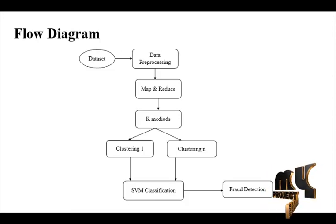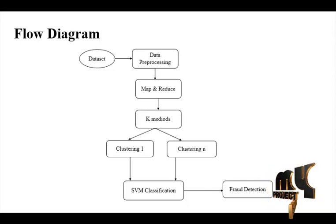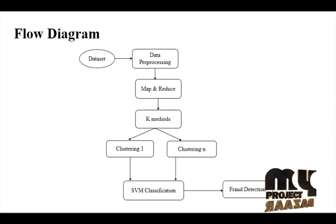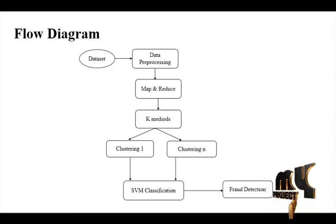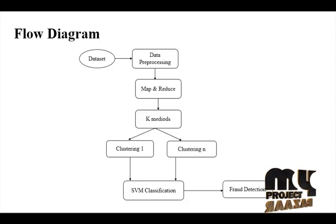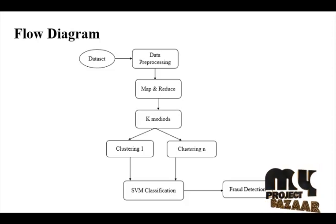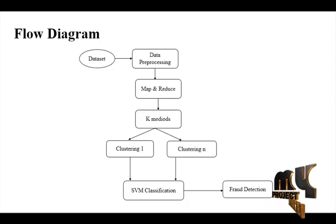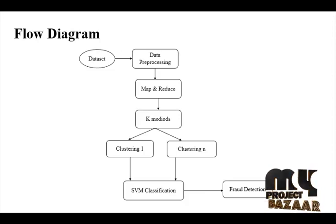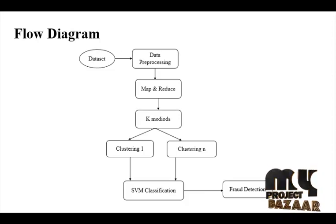Likewise, education loan, vehicle loan — these loan types will be present. Using the loan type, the data will be clustered. After clustering, we classify each clustered dataset. For classification, we identify using the loan type and the year amount — whether it is payable by card or cash. Only then do we find the fraud detection.